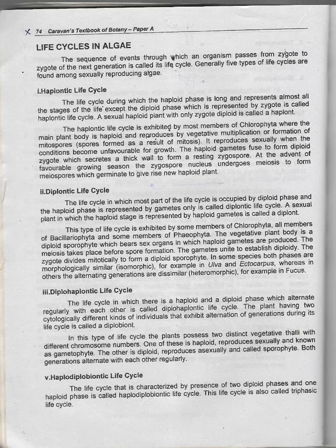Now let's start the diplontic life cycle. The life cycle in which most part of the life cycle is occupied by the diploid phase, and the haploid phase is represented by gametes only, is called the diplontic life cycle.